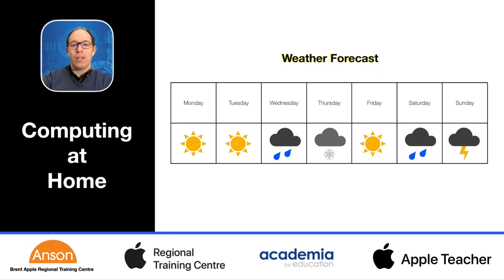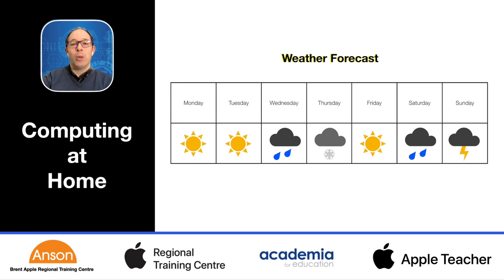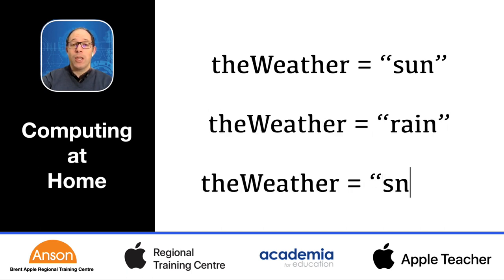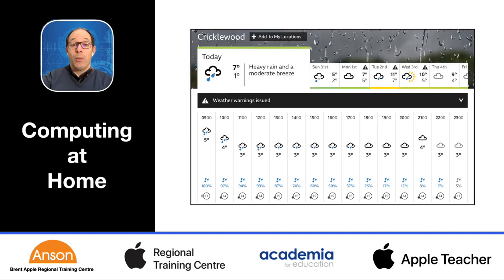Let's take 30 seconds to look at this weather forecast and ask yourself: what can change in the weather forecast and what will remain the same? In a weather forecast, the pieces of information that could be different are the types of weather we may see on those days. A computer needs to know what all the possibilities are for the weather, which might look something like this: the weather equals sun, the weather equals rain, the weather equals snow. With this information it can be programmed to give us the weather forecast on a website like the BBC.